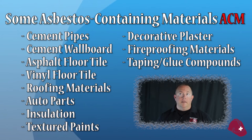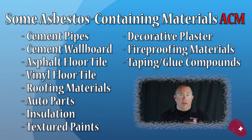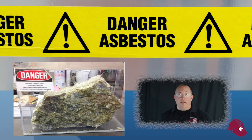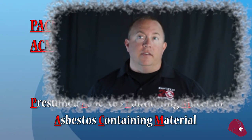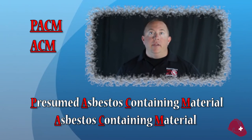Certain materials found in the workplace have the potential to contain asbestos. Asbestos was used extensively in the past to make insulation, roofing materials, tiles, and more because of its unusual durability and fire resistance. Asbestos has unfortunately been found to cause cancer in humans, and so OSHA has put in place regulations to protect workers from exposure. Anytime material that may contain asbestos is encountered in the workplace, it should be considered to contain asbestos until proven otherwise.